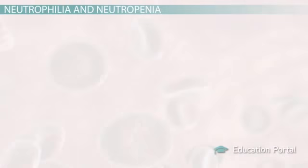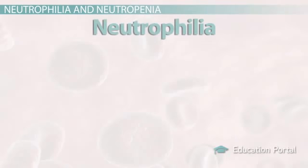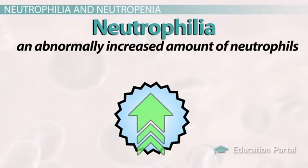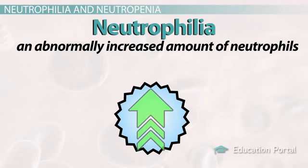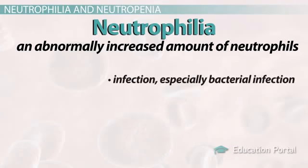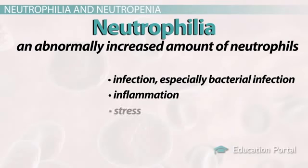It is safe to say that leukocytosis most commonly occurs as a result of neutrophilia, which is an abnormally increased amount of neutrophils. Keep the following general reasons in mind for why neutrophilia may occur: infection — especially bacterial infection — inflammation, especially increased in acute inflammation more so than other leukocytes, stress, cancer, drugs, and more.